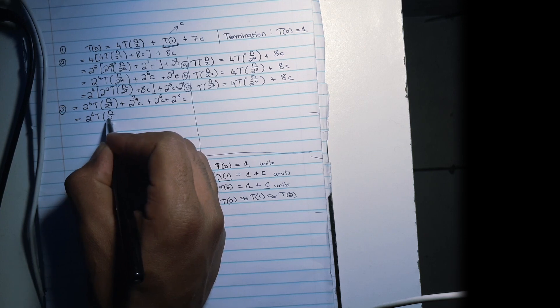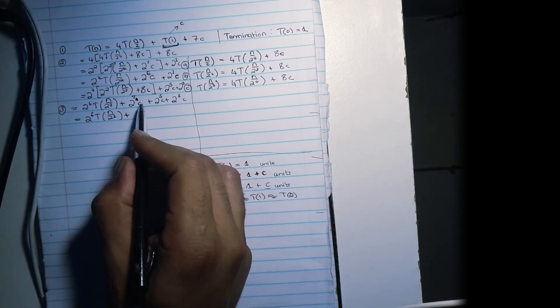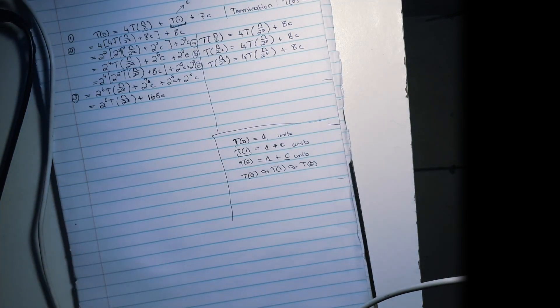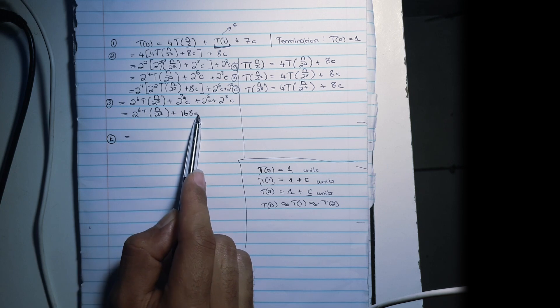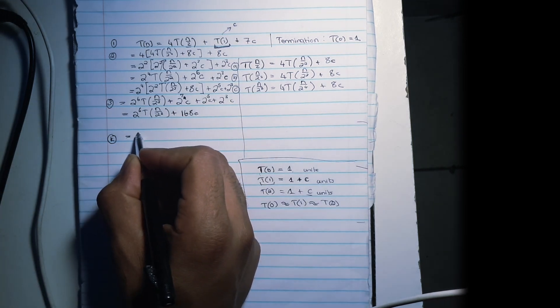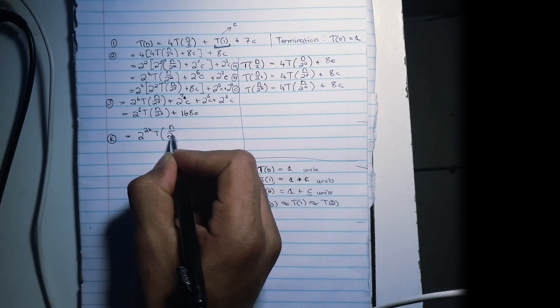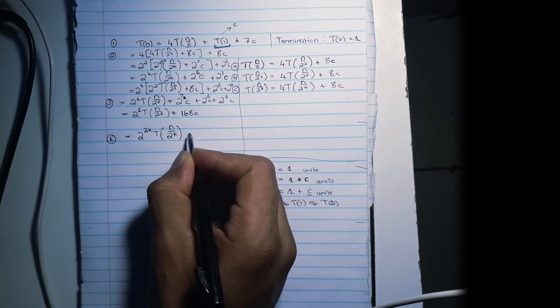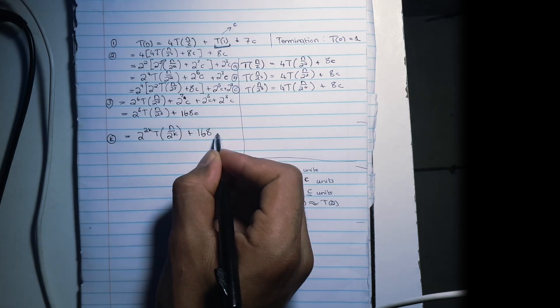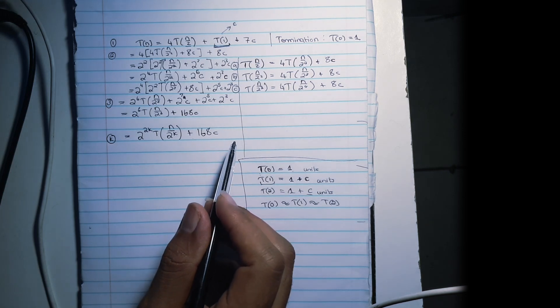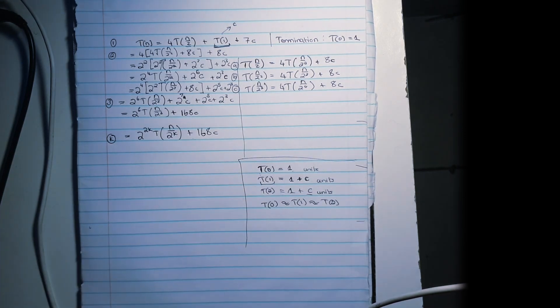We have 2 to the power of 6 times T of N over 2³, plus we're going to add all this up — 168C. Now we're trying to generalize. For the Kth substitution, what's our T(N) expression? When K was 3, we have this expression. We can generalize and say this equals 2 to the power of 2K times T of N over 2^K, plus 168C. We're interested in finding the value of K, so we look at our termination condition.